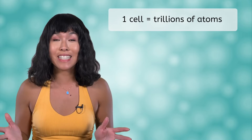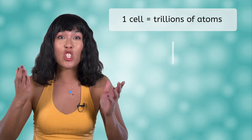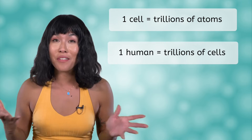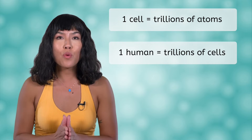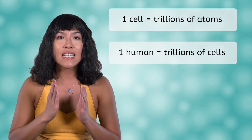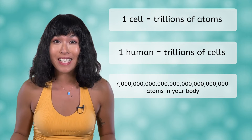So we could also say that living things are made of atoms. An average human cell contains trillions of atoms, and your body contains trillions of cells. That means you have around seven octillion atoms in your body.